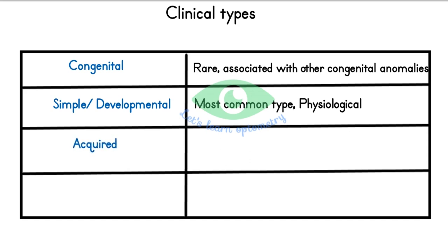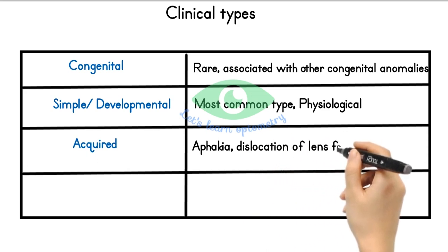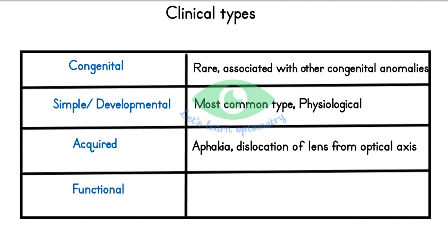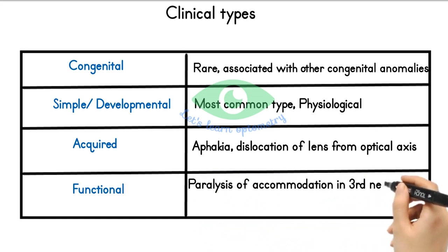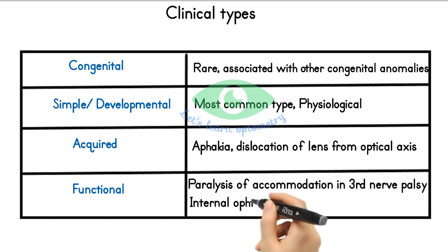Acquired hypermetropia is found in aphakic conditions, commonly following extraction of the lens and dislocation of lens from the optical axis after trauma. Functional hypermetropia occurs with paralysis of accommodation in patients with third nerve palsy and internal ophthalmoplegia.